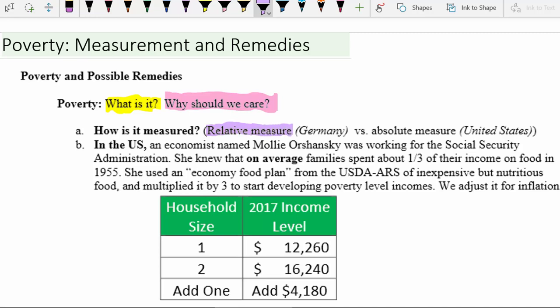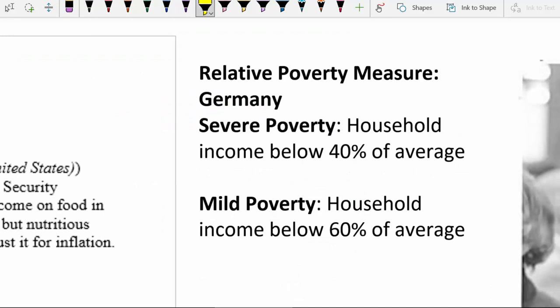One way is to define it as a relative measure, as Germany does. A relative measure means that a household has an income below some measure compared to the average or median of all households. In Germany, a household is in severe poverty if its income is below 40% of the average income for a household of that size, or mild poverty if below 60% of that average.